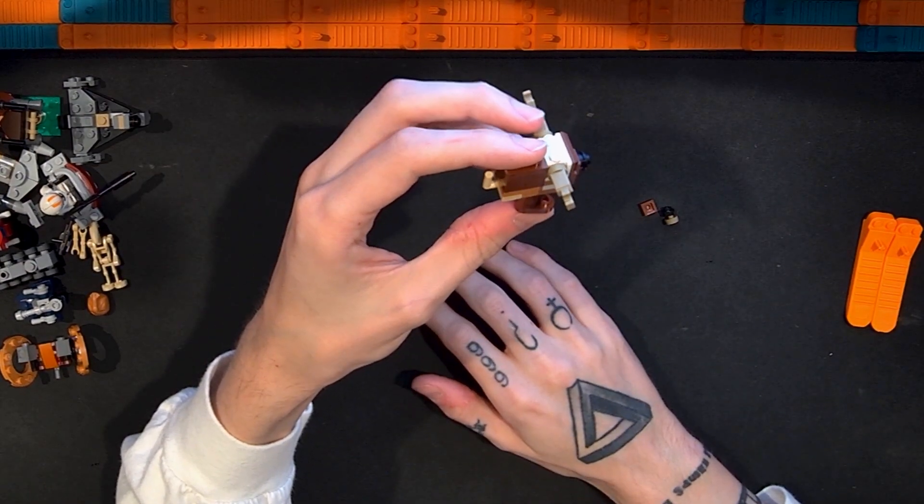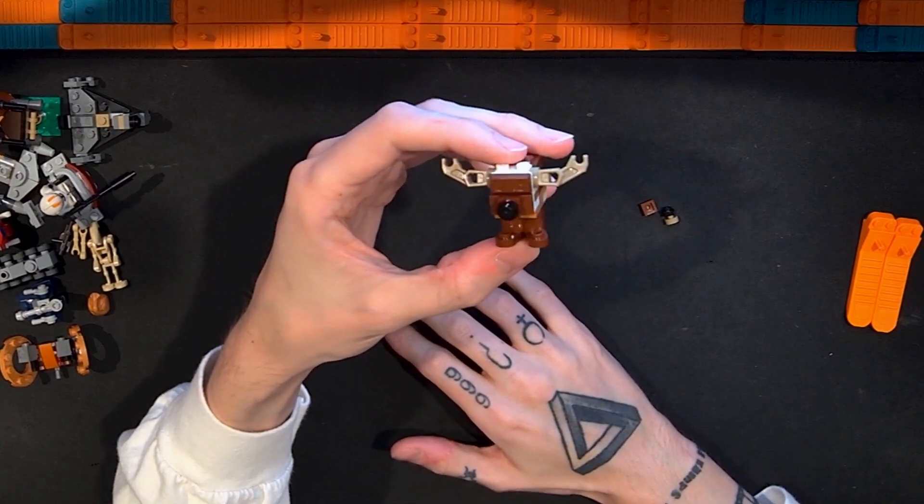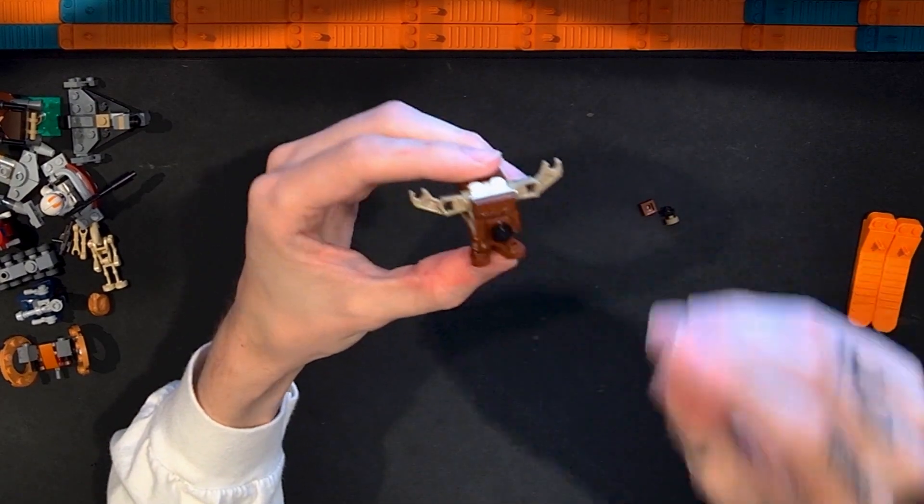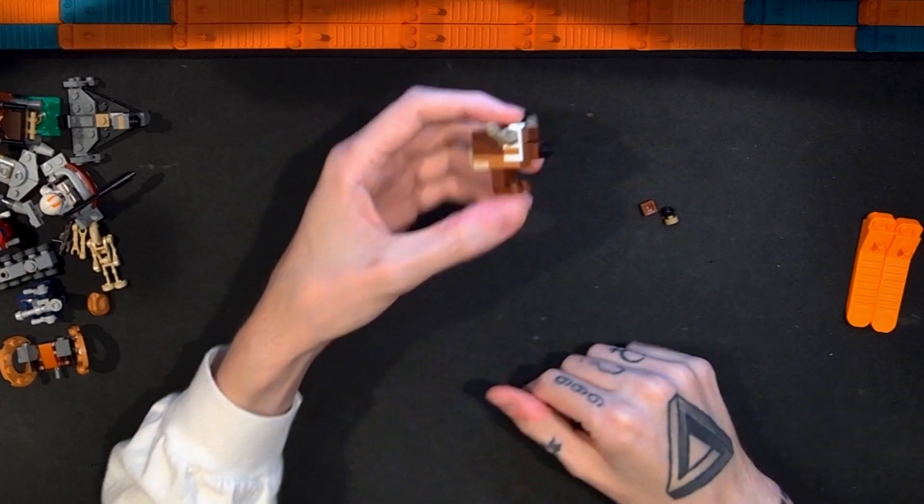I think this does kind of fit all of the required elements of a gonk droid and it also does look like a reindeer.